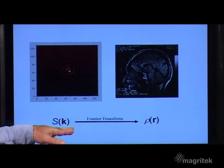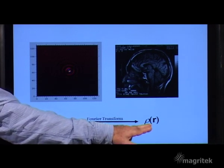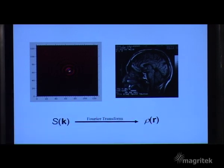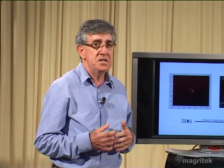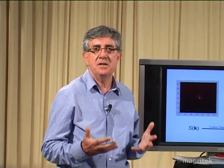That signal is then Fourier transformed to obtain the spin density image. Now with those basic ideas of k-space and the traverse through k-space there's nothing about modern medical MRI that we can't understand. These are the key ideas.